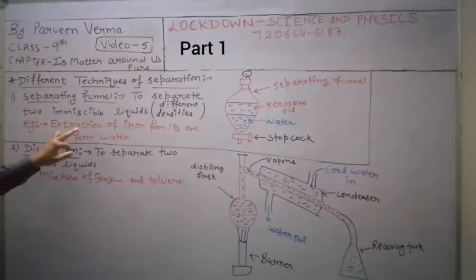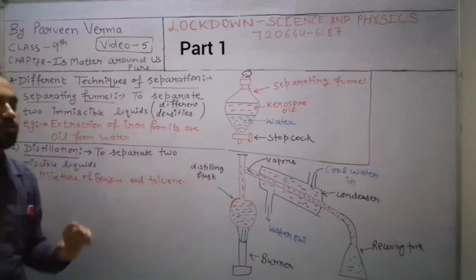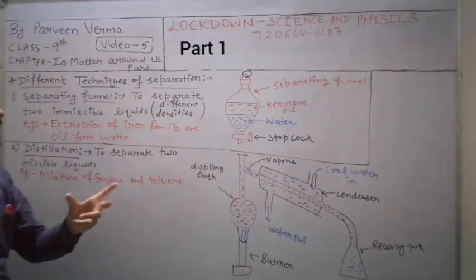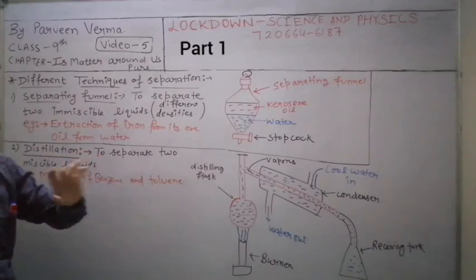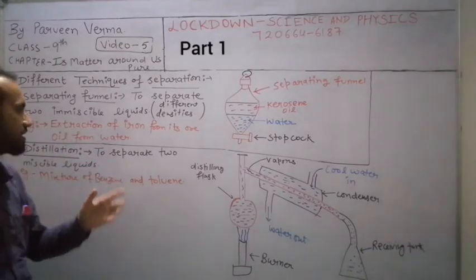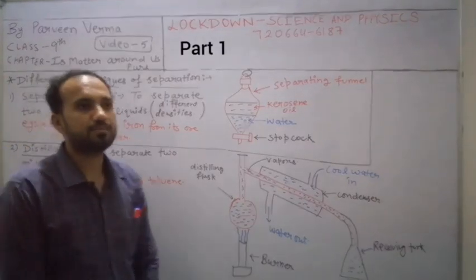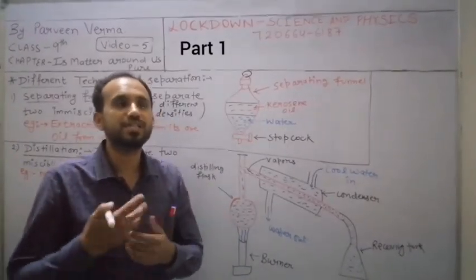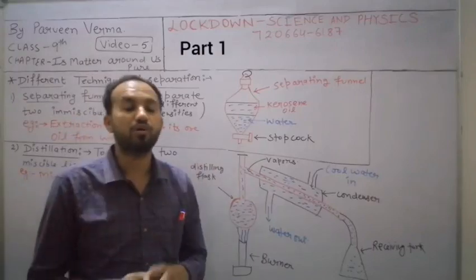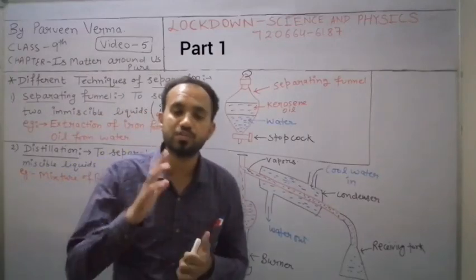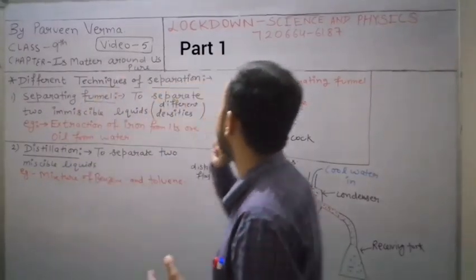An example is the extraction of iron from its ore. If you want to separate oil from water, you would need to use a separating funnel. For instance, if oil accidentally mixes with water and you want to separate them, you would use a separating funnel.